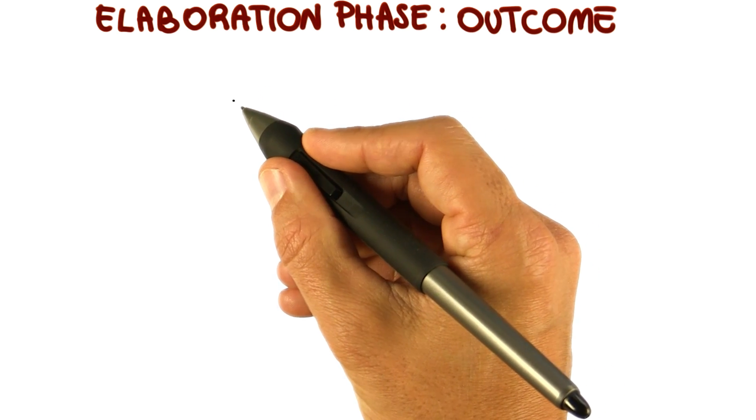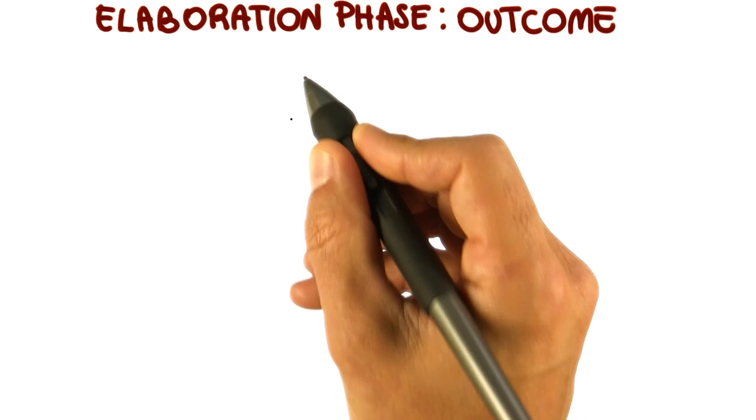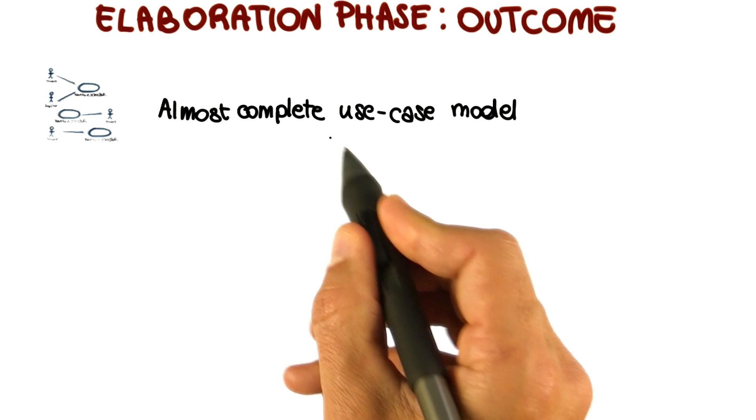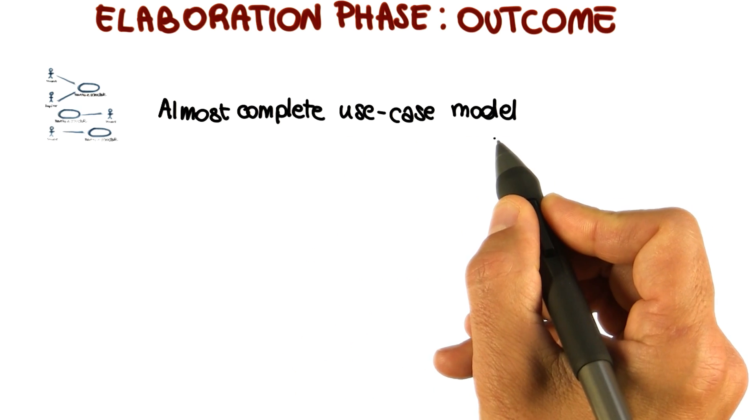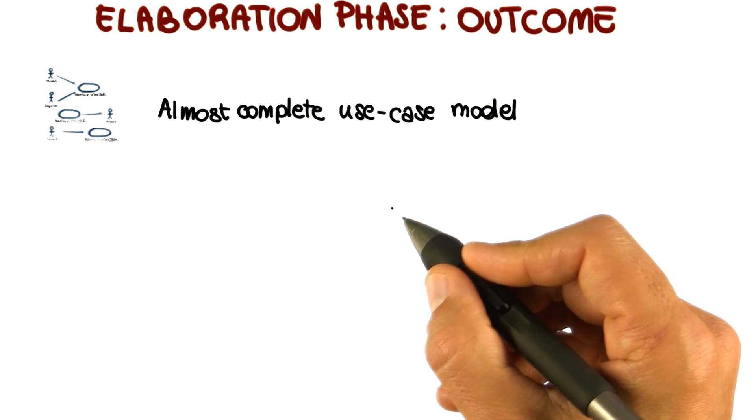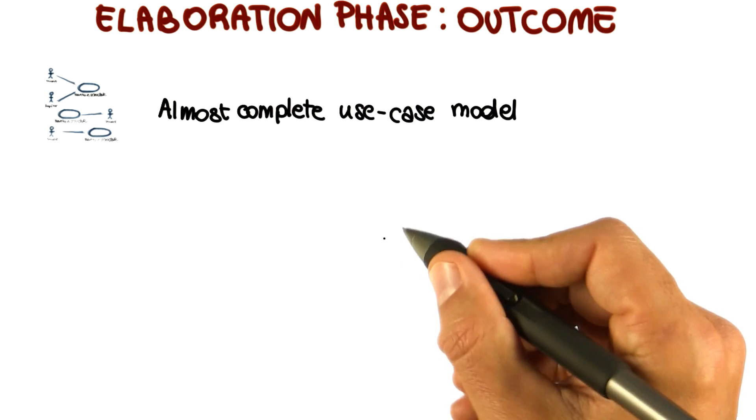The outcome of the elaboration phase reflects these activities and produces several artifacts. The first one is an almost complete use case model with all use cases and actors identified and most use case descriptions developed.